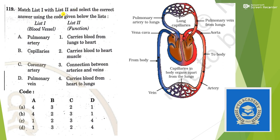Next: match list 1 with list 2 and select the correct answer. We have to match the blood vessels. Pulmonary artery — deoxygenated blood from the heart is going to the lungs, and after getting oxygenated it comes back to the heart and is pumped throughout the body. So pulmonary artery carries blood from heart to lungs — for A it should be 4. Capillaries — these are the connection between veins and arteries, so for B it is 3. For A it is 4 and for B it is 3, so this is our answer.